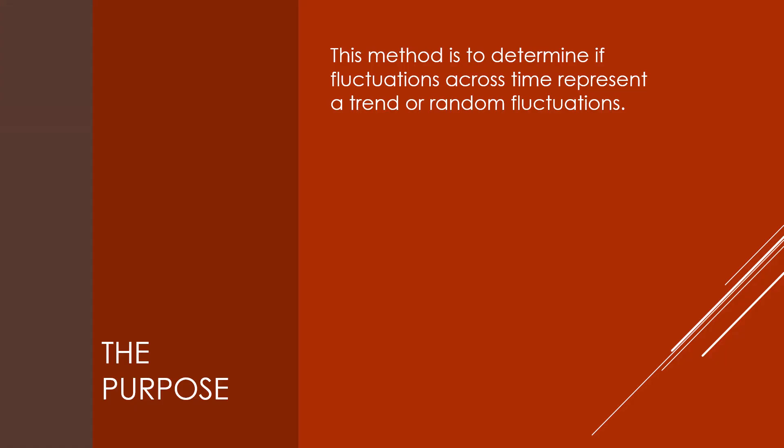This method is to determine if fluctuations across time represent a trend or random fluctuations. We humans are really good at detecting patterns that aren't actually there. We may think we see an upward or downward trend among data that go up and down. But when data go up and down, are we really detecting a general trend or are these just random fluctuations?